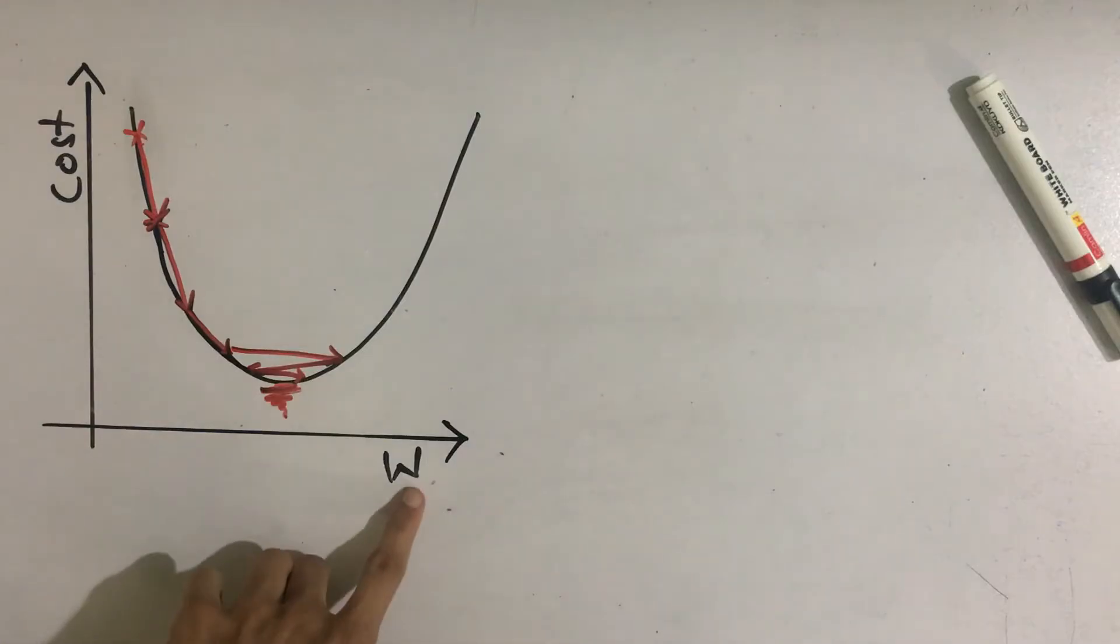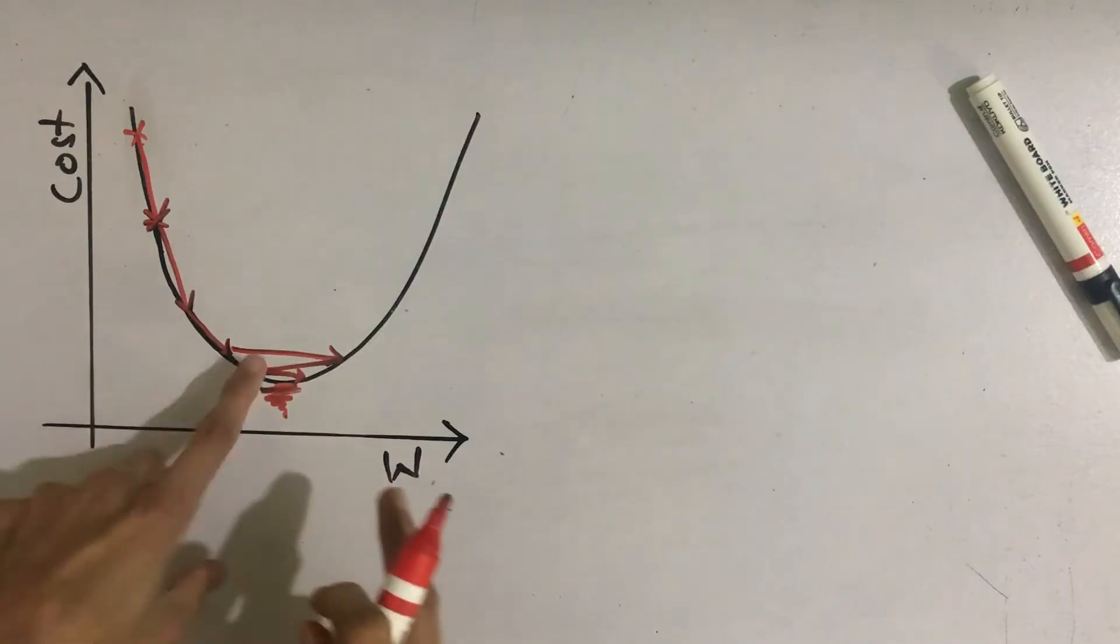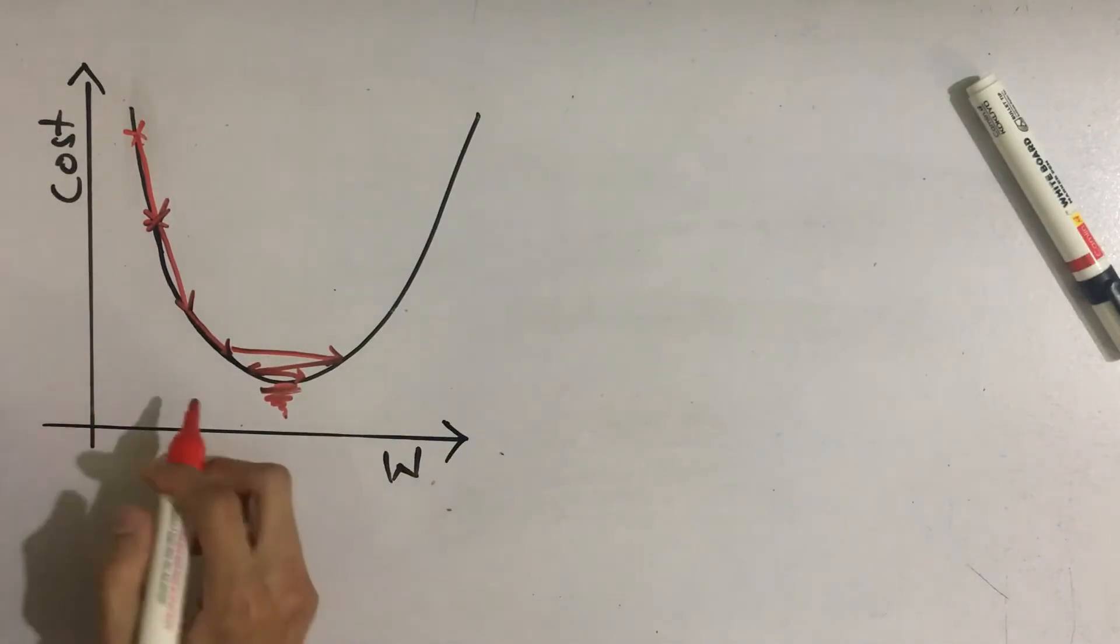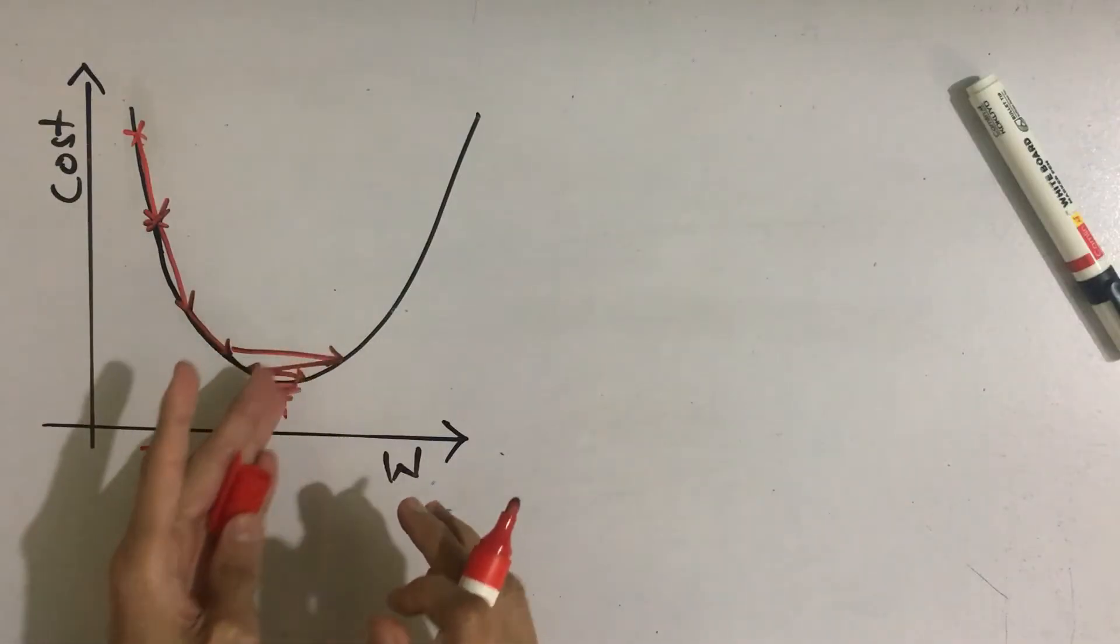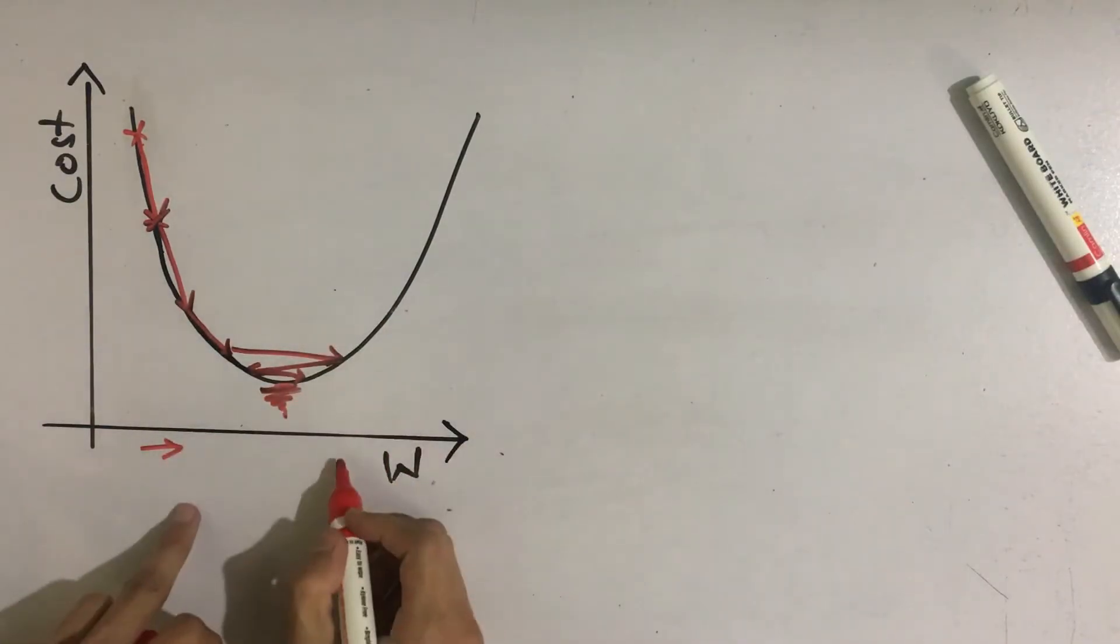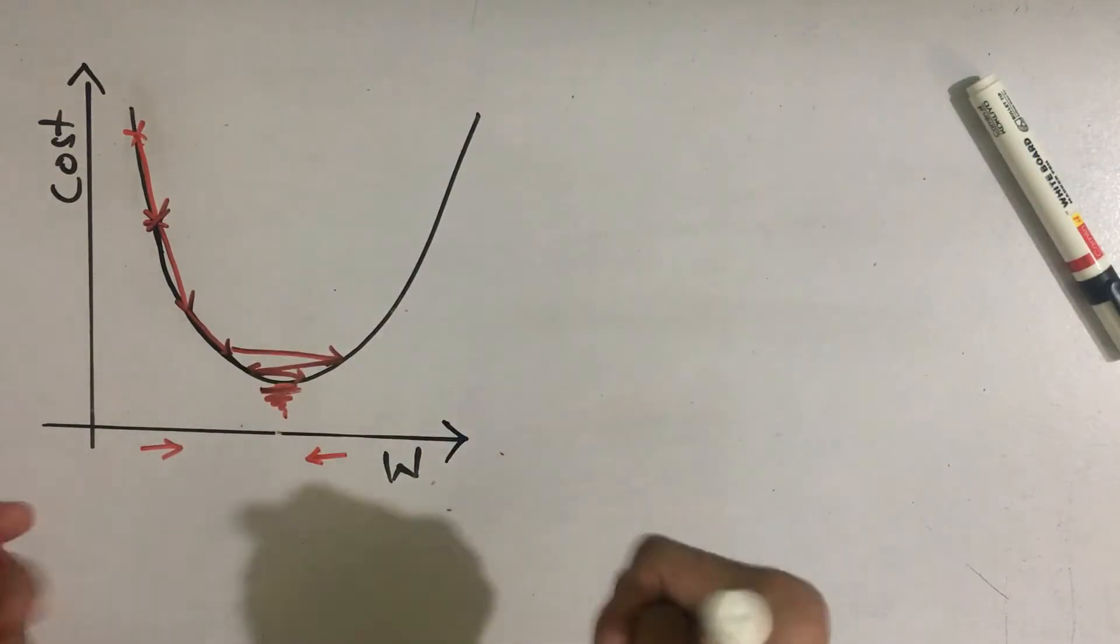So we can update w in such a way that it always converges. If we are at this side, then the w increases and we get towards the minimum. And if we are at this side, then w should decrease so that we get at this side. So how can we do that?